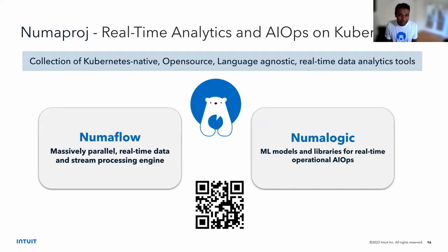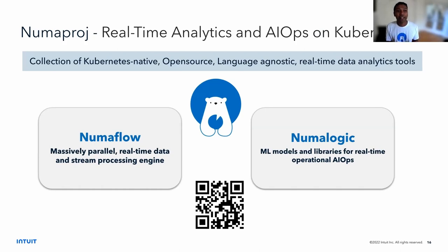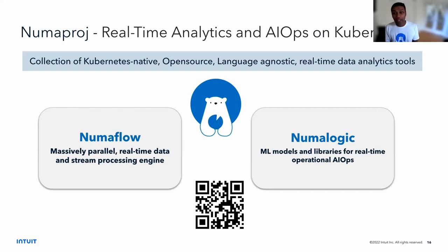To do this at scale, systems like Flink handle centralized data engineering, but to move the processing all the way to the source and get clean enriched data we need a very lightweight system that can do lightweight stream processing with analytics. This is why we built an open source project called Numa Approach — a Kubernetes-native, language-agnostic, real-time data analytics tool. It has two parts: NumaFlow, the central engine for computation on streaming unbounded input, and NumaLogic, a collection of ML models and libraries.